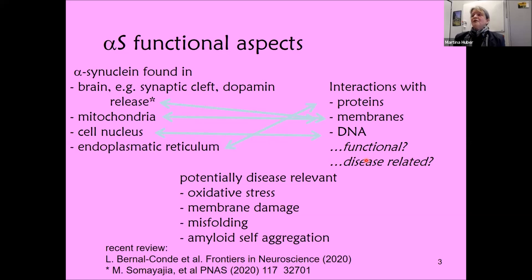Where it could play a role includes oxidative stress, membrane damage, misfolding, and of course the self-aggregation that is the hallmark of the disease. Let's take a look at what we're going to discuss today. I want to focus on the membrane interaction of alpha-synuclein and then on the self-aggregation of amyloids.